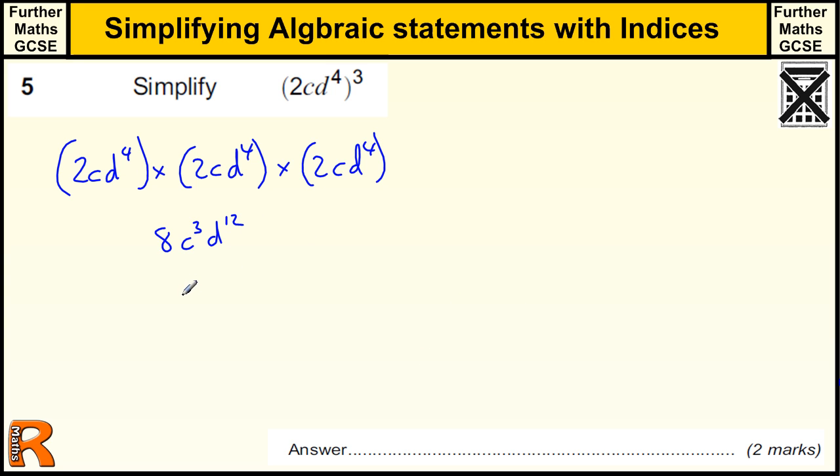So this is a 2 mark question. You would get 1 mark if you've got any 2 components, so either the 8, the c cubed, or the d to the 12. Any 2 of those would give you 1 mark, but you need all 3, 8, c cubed, d to the 12 for 2 marks.